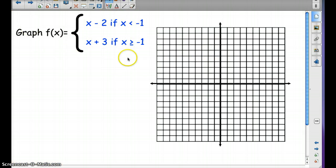So this is what a piecewise function looks like. We have two functions and two situations. When x is less than negative 1, you'll graph this. When x is greater than or equal to negative 1, we'll graph x plus 3.